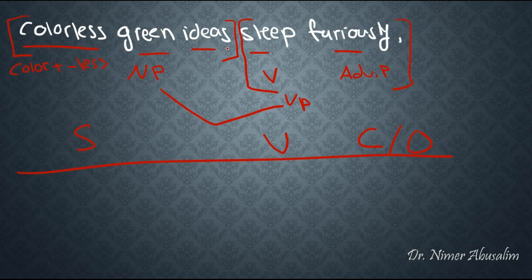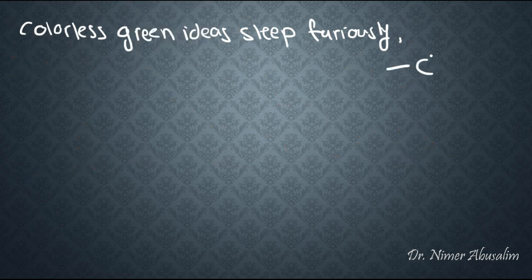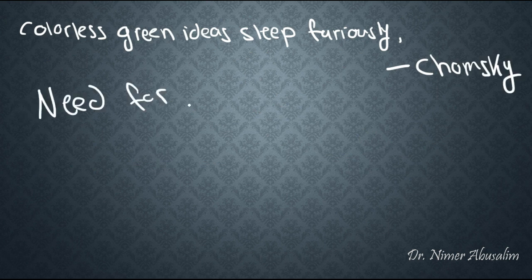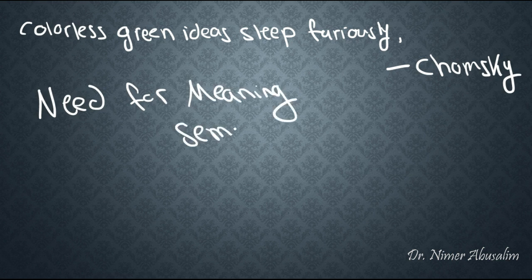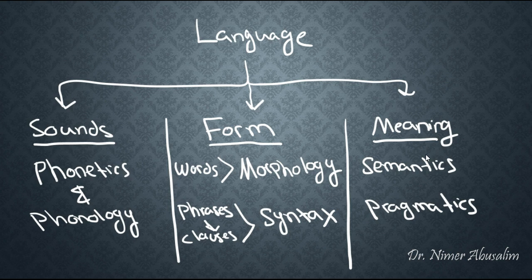Colorless green ideas sleep furiously. The problem we come up with here is that colorless green ideas cannot sleep furiously. Ideas do not sleep — people sleep, animate subjects can sleep. So this is actually a sentence given by Noam Chomsky as evidence for the need for meaning, or the need for semantics. And this is exactly why we needed meaning to be part of language, or part of the grammar of a language.